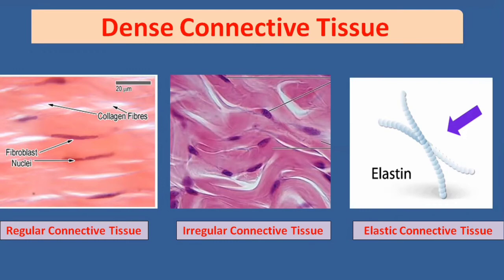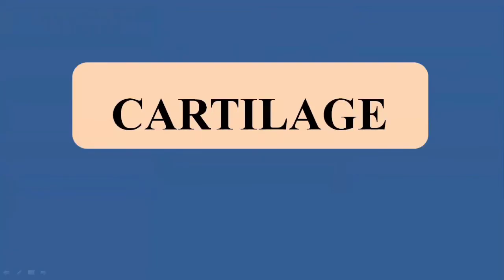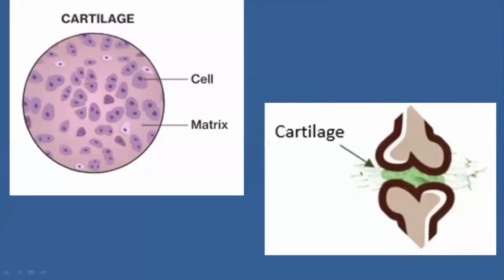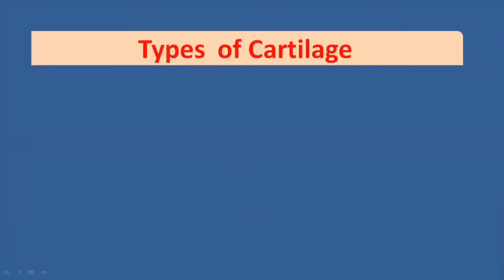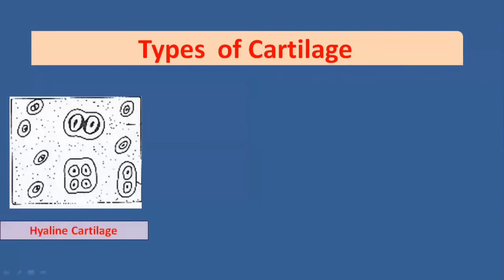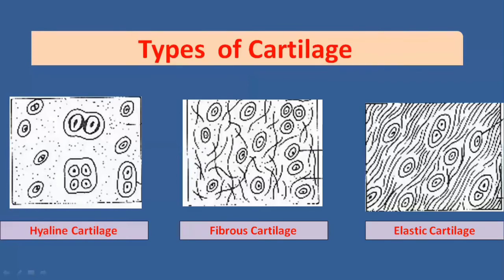That was about connective tissue proper. The other type of connective tissue is cartilage. Cartilage also has a matrix and cells. It provides strength, support, and elasticity to different organs of the body, and also acts as a cushion and shock absorber. Cartilage is further divided into three types depending on location and function: hyaline cartilage, fibrous cartilage, and elastic cartilage.